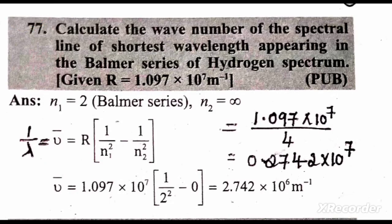This numerical belongs to CBSE chemistry, structure of atom chapter, to calculate the wave number of the spectral line of shortest wavelength appearing in the Balmer series of hydrogen spectrum.